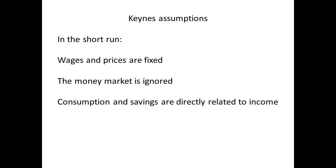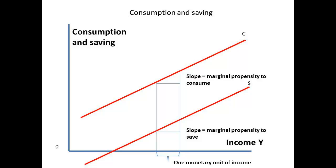The money market — meaning interest rates — is ignored. The assumption is that consumption and savings are both directly related to income. The graph assumes the relationships are linear. The greater the income, the greater the consumption, and the greater the amount that is saved by a household.